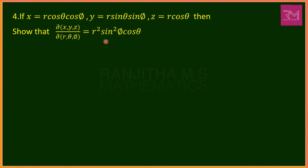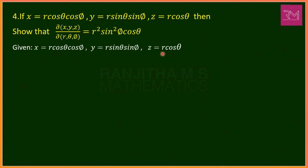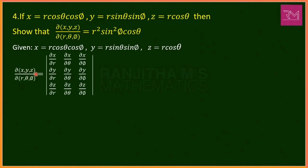The Jacobian formula is the 3×3 determinant of del x/del r, del x/del θ, del x/del φ, del y/del r, del y/del θ, del y/del φ, del z/del r, del z/del θ, del z/del φ. For x = r cosθ cosφ: del x/del r = cosθ cosφ; del x/del θ = −r sinθ cosφ; del x/del φ = −r cosθ sinφ.